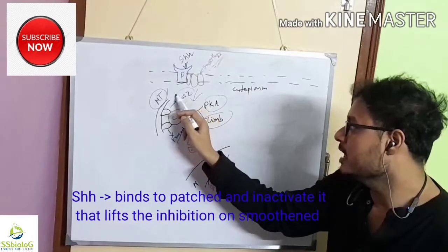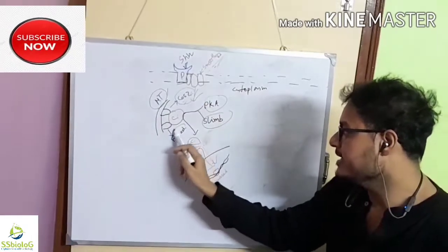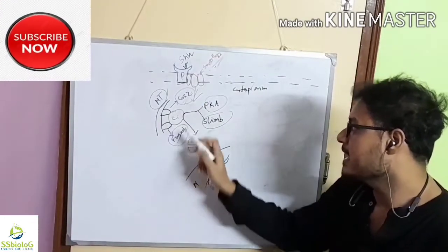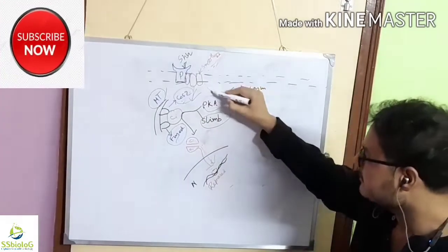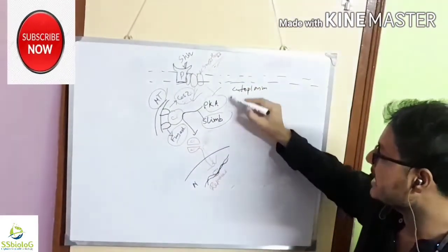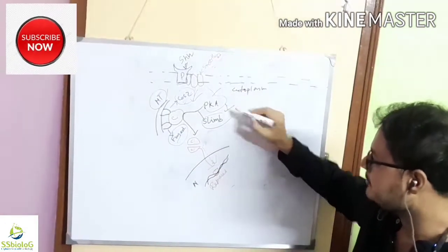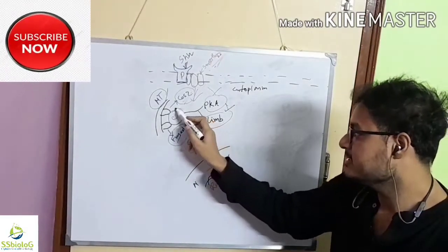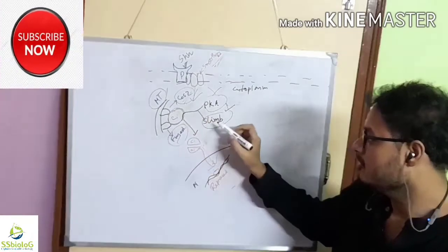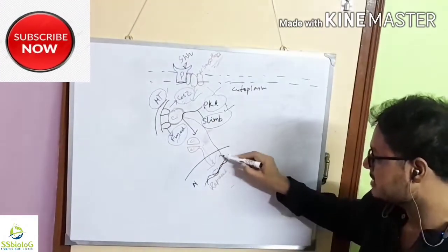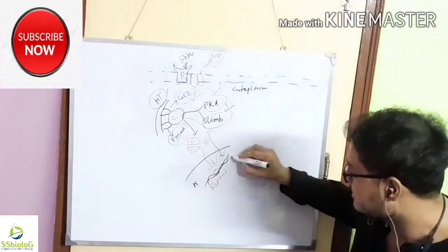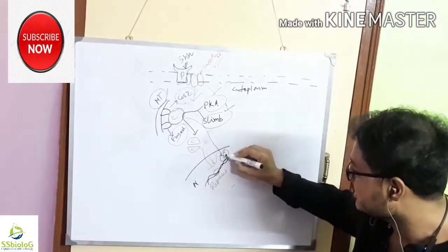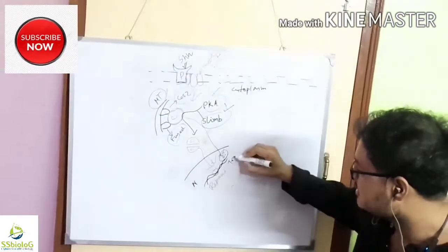This causes phosphorylation of the Cos2 and Fused protein and also inactivates PKA and Slimb protein. And that's why CI protein is now free and enters the nucleus and acts as a transcription activator. Then the intact CI protein acts as transcription activator.